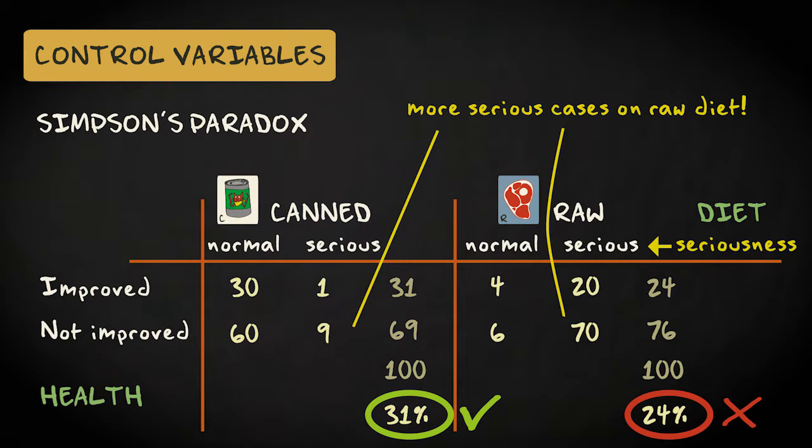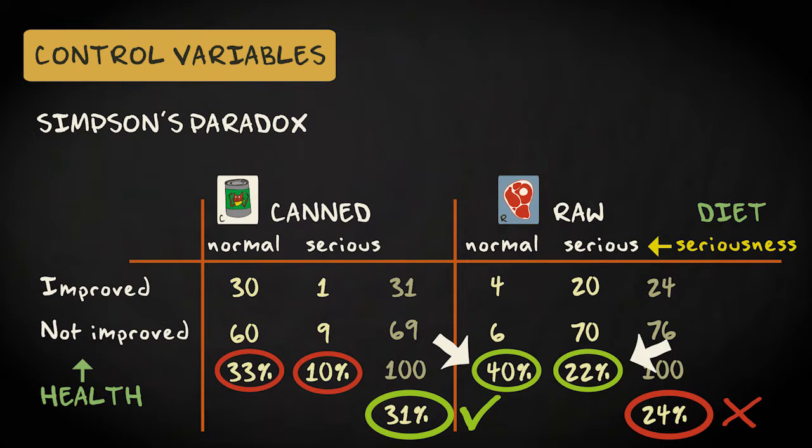Now suppose that the prescription of raw versus canned food is related to the seriousness of the urinary problems, and that seriousness is also related to health improvement. We see that for both serious and normal health issues, the raw diet outperforms the canned diet. The overall percentage of improvement for the raw meat diet is greatly lowered because there are so many serious cases, obviously with a smaller chance of improvement, put on this diet. This is a typical example of Simpson's paradox.